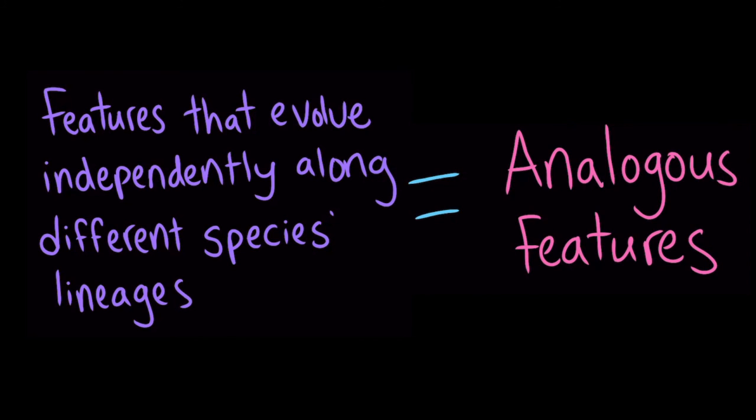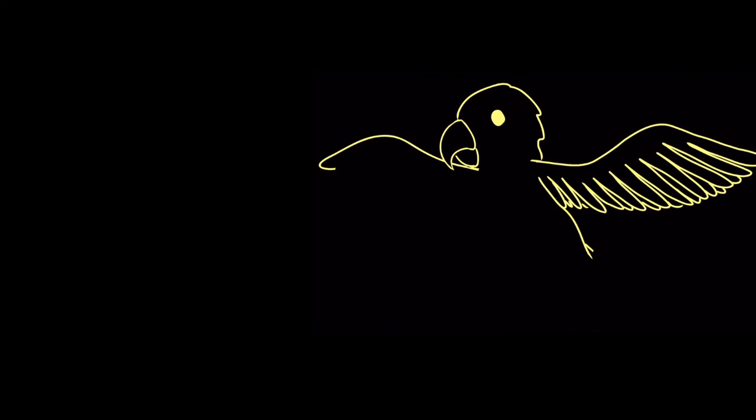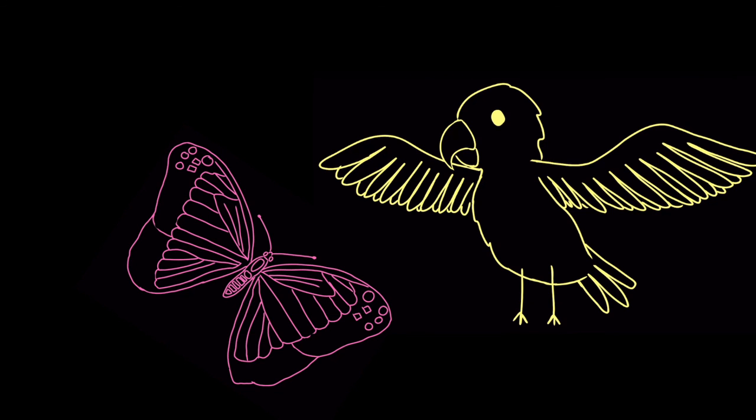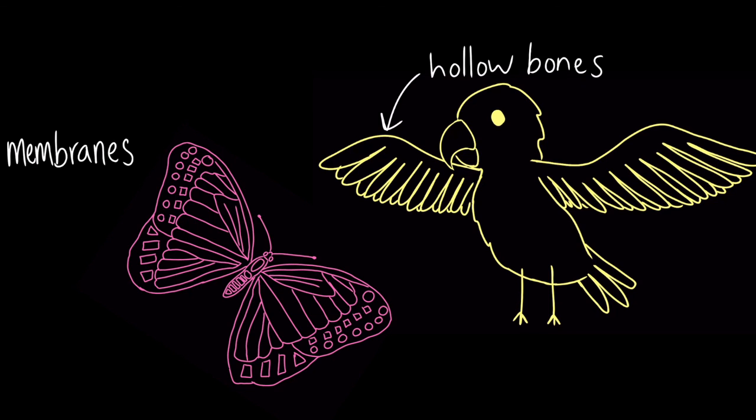For example, let's take a look at the wings of two flying creatures, a bird and a butterfly. In order to figure out whether the wings are homologous features, we need to examine the physical structure of the wings. The bird's wing is made up of hollow bones, while the butterfly's wing is made up of membranes made out of a protein called chitin. So even though birds and butterflies can both fly, their wings have very different structures.